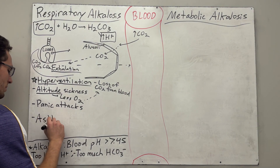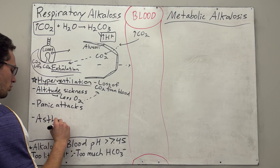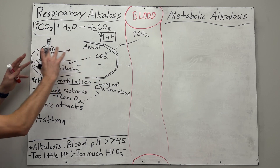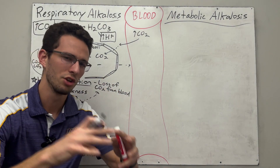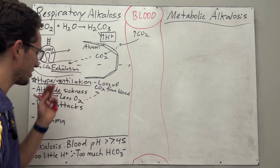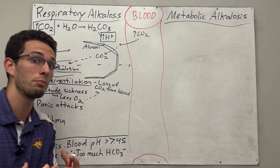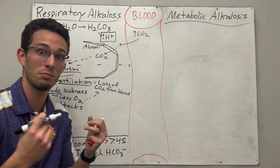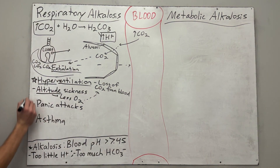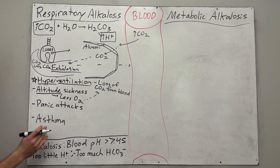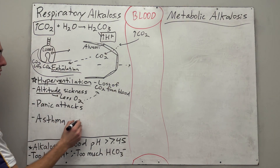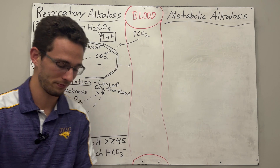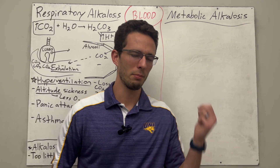Now, the last cause of respiratory alkalosis — asthma. Asthma is when your bronchi, the tubes going to the alveoli, are closing up and narrowing. So in order to get oxygen in, you've got to breathe in more — breathe in, breathe out, repeatedly — and by hyperventilating due to the asthma, we also have that loss of CO₂ from breathing out too much. Pretty simple for respiratory alkalosis.